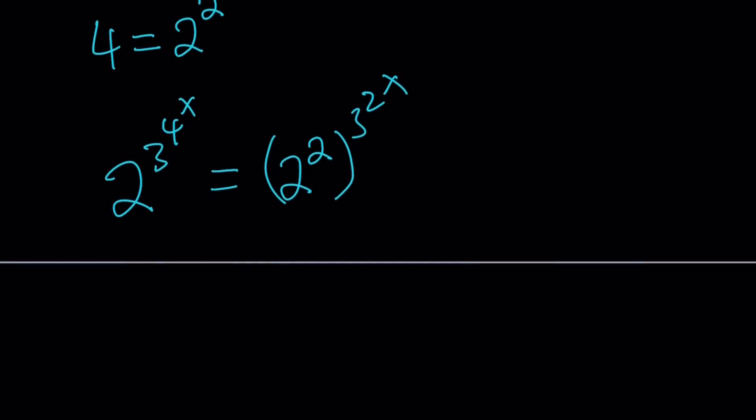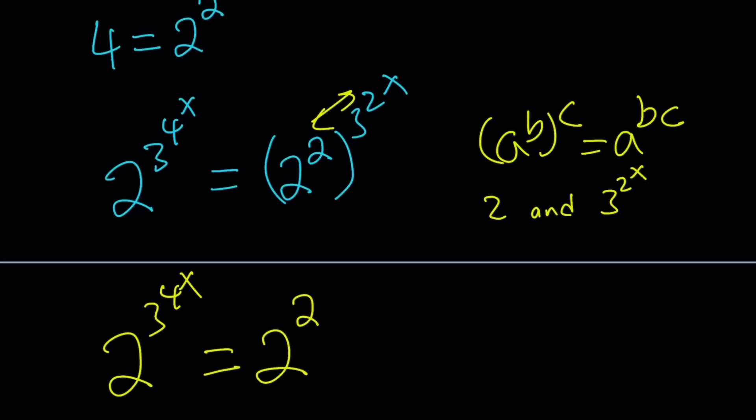We're going to use the power rule so if you have something like (a^b)^c this is equivalent to a^(bc) as I said earlier. So we're going to multiply these two exponents: 2 and 3^(2^x). That gives us 2^(3^(4^x)) = 2^(2·3^(2^x)).